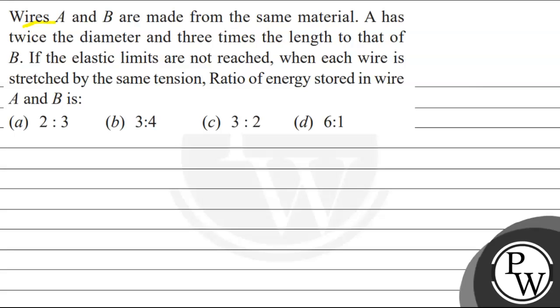Let's read this question. The question says that wire A and B are made from the same material. A has twice the diameter and three times the length of that of B.